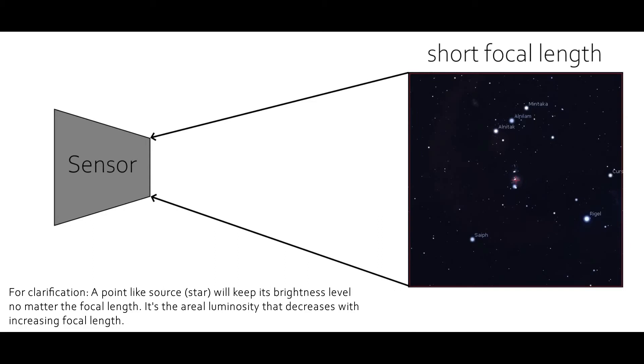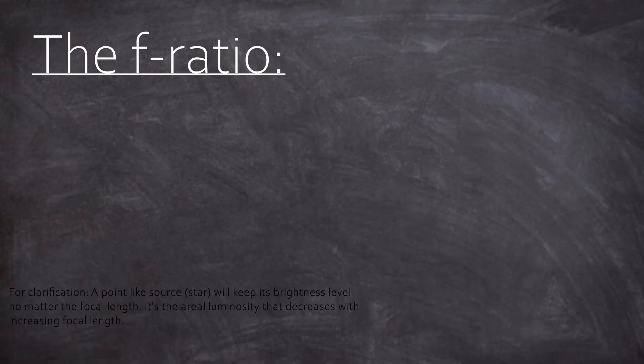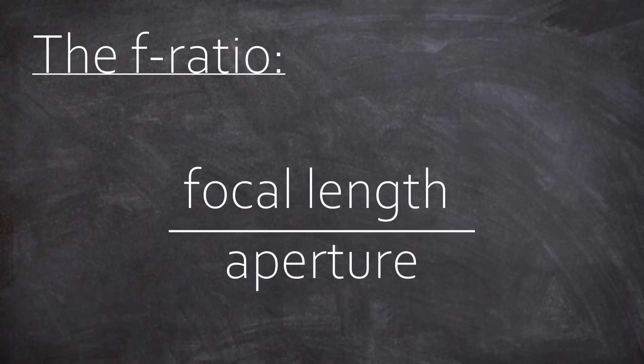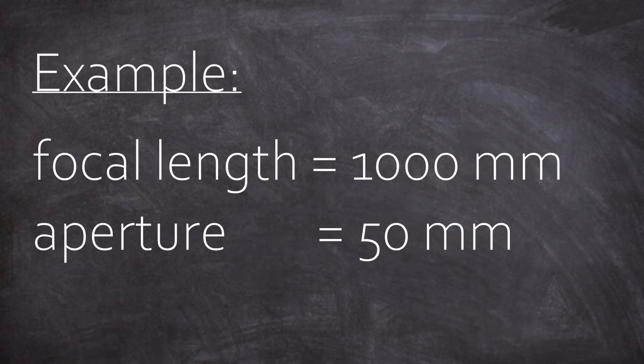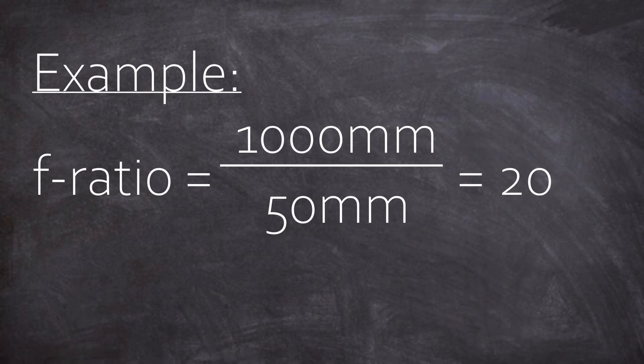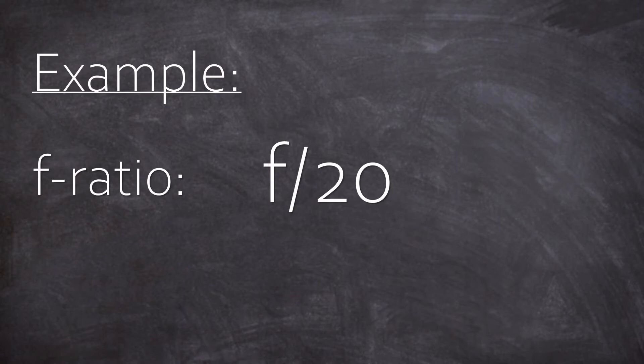And to get an idea of what the scope can deliver, we introduce the f-ratio. The f-ratio is simply the focal length divided by the aperture. So if you have a long scope, say 1000mm, and a small aperture, say 50mm, then you get an f-ratio of 1000 divided by 50 equals 20. And then we write f20 to indicate that this is a ratio.